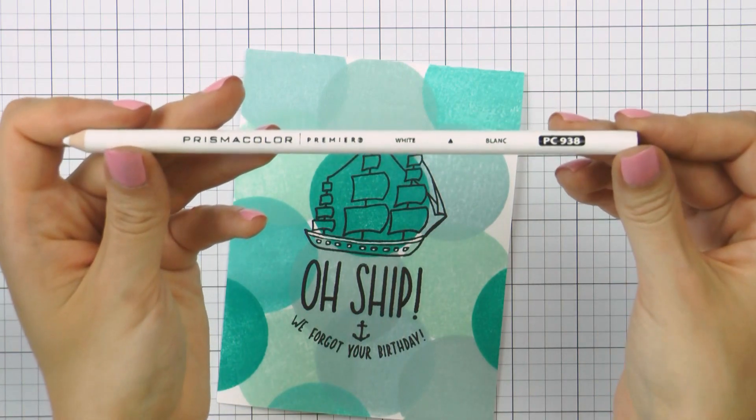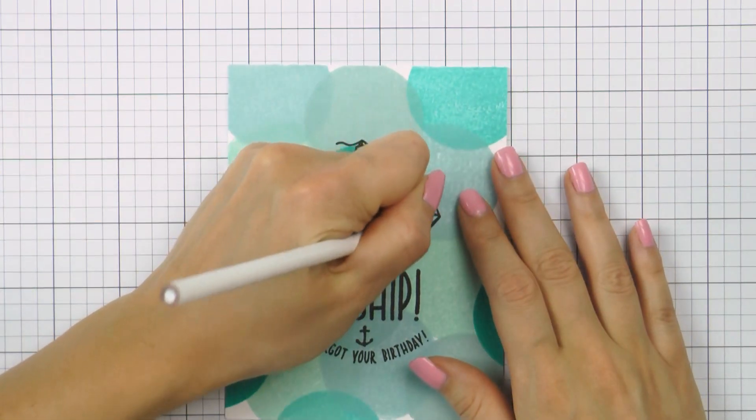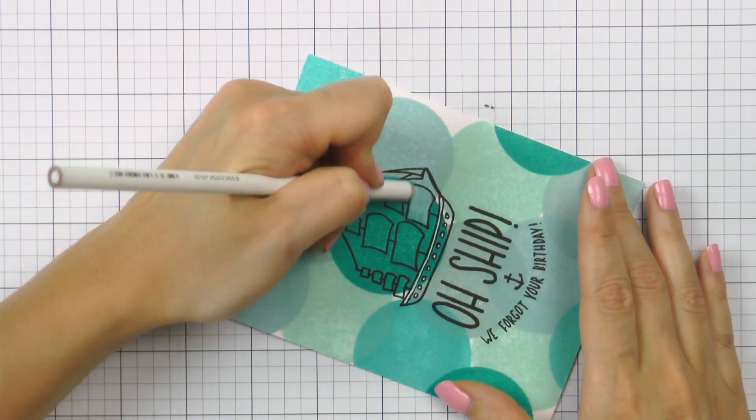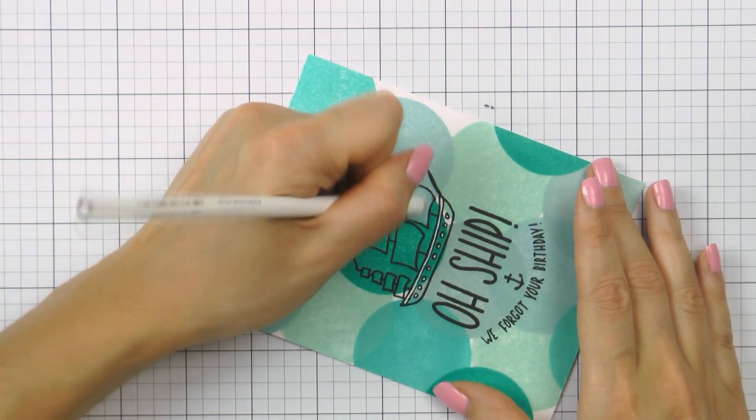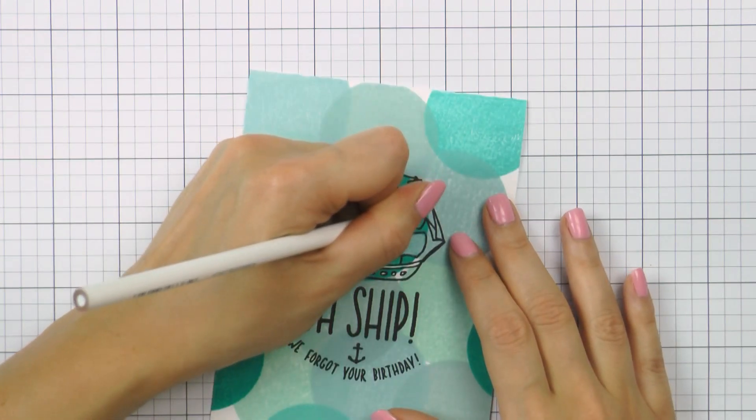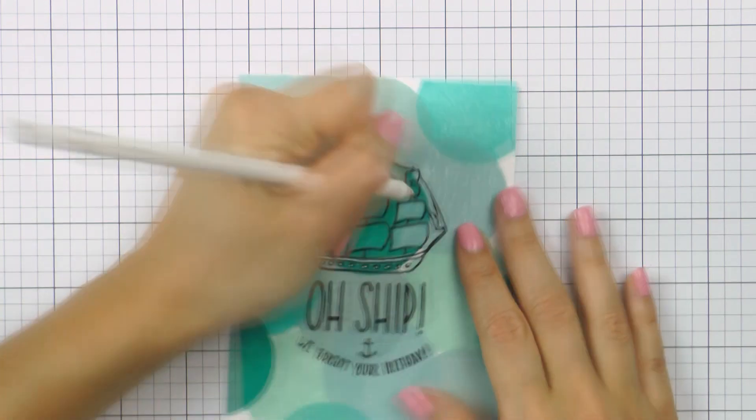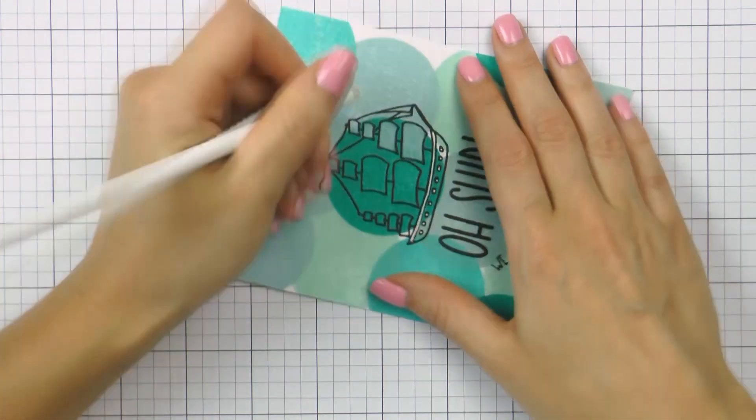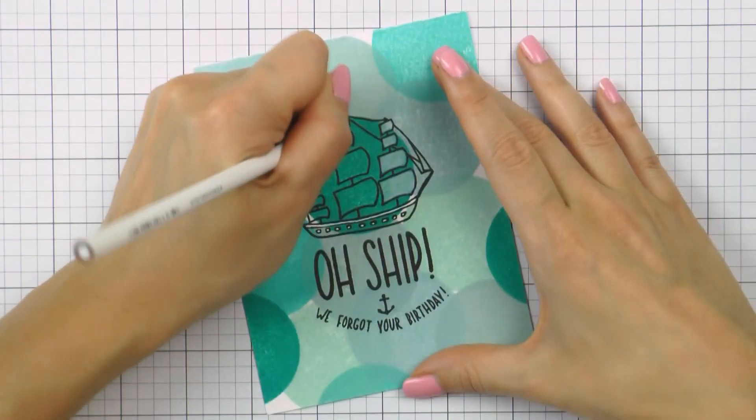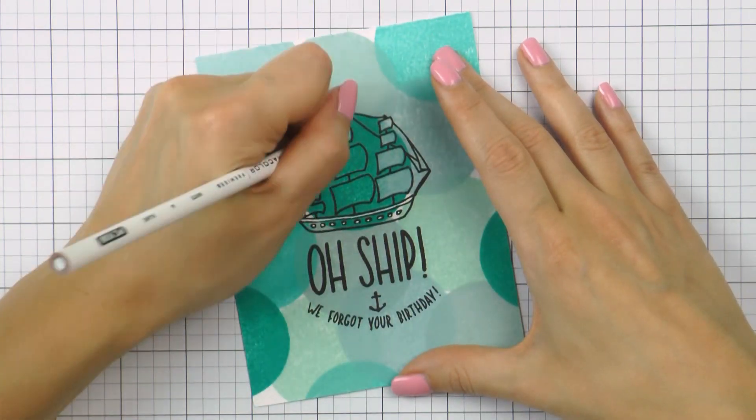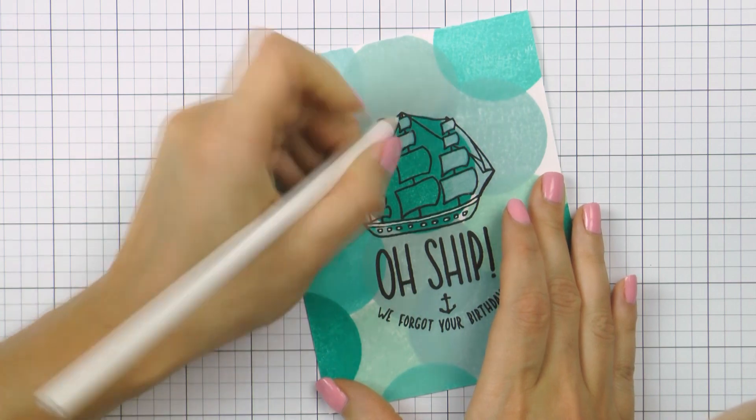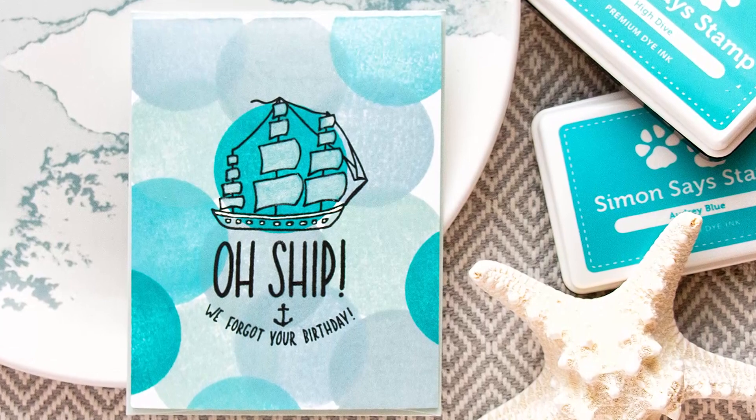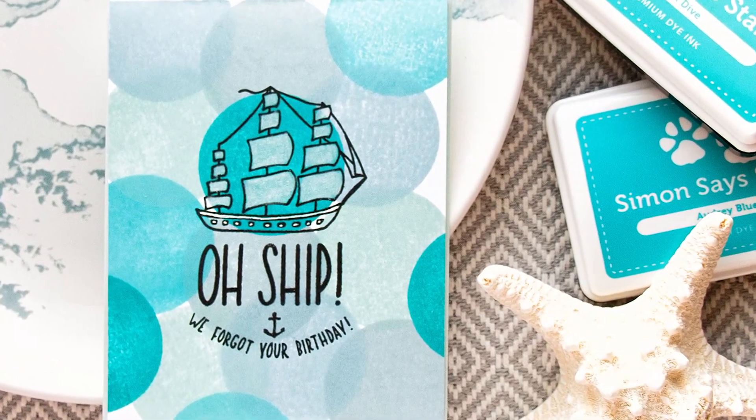The one that was stamped directly onto the card base was left pretty much as is. I added a small stamped anchor under the Oh Ship and above the We Forgot Your Birthday sentiments. And I also used a white Prismacolor pencil to color in the sails. I didn't like that they were all a different color from that background stamping underneath, so I used a pencil to mute the color and lighten them up a bit. Using a pencil didn't make them white, but it did lighten the color. If you'd like them to be true white, you can use a white gel pen or do what I did for my card number two and I'll share that in just a minute.